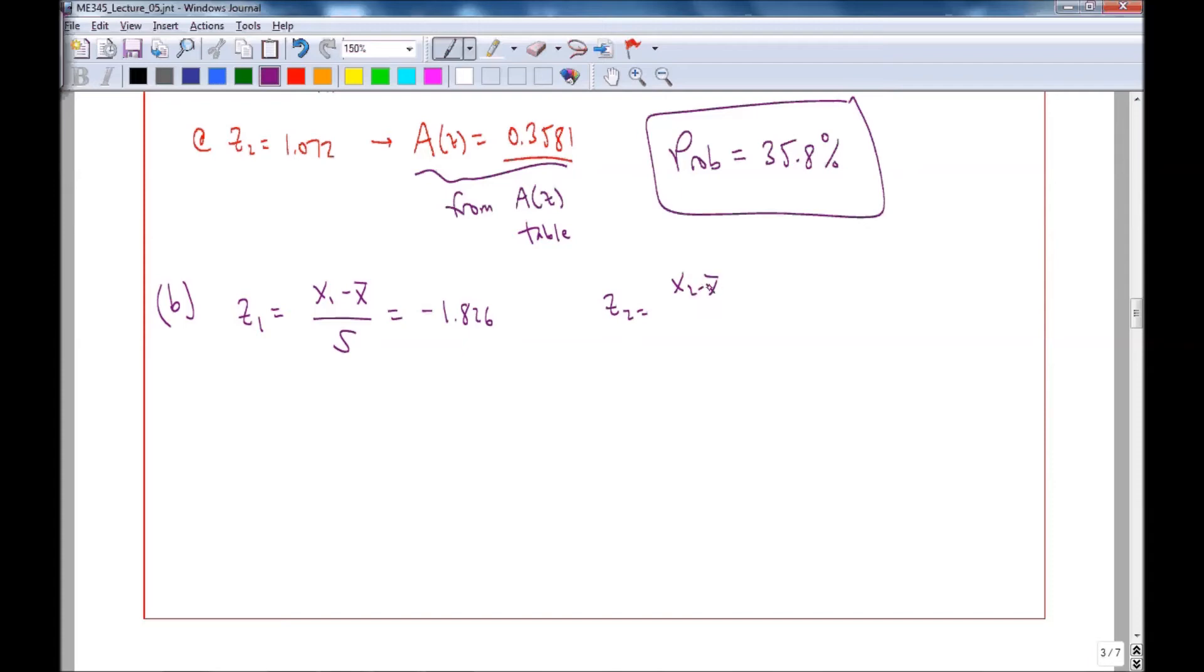Z2 is X2 minus X bar over S. And we get 1.072, same as the previous problem actually, which was 1.072. And so from that problem, from A, A of Z2 was already calculated as 0.3581.